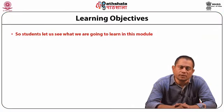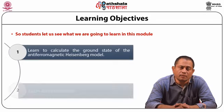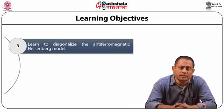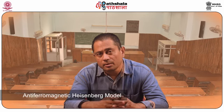So students, let us see what we are going to learn in this module. We will learn to calculate the ground state of the Anti-Ferromagnetic Heisenberg model, learn what Neel states are, learn to diagonalize the Anti-Ferromagnetic Heisenberg model, and learn to calculate the energy of a Magnon.